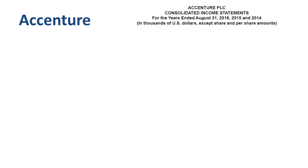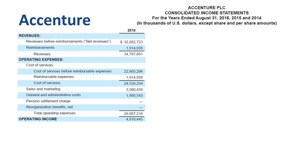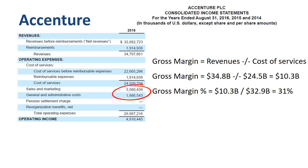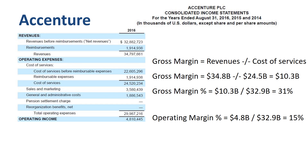Accenture's financial year ended on August 31st, 2016. In the 12 months of their fiscal 2016, they generated 32.9 billion in net revenues and 4.8 billion in Operating Income. Gross Margin is not mentioned as a separate line item, but we can calculate it by taking revenues minus cost of services. Gross Margin is 10.3 billion dollars, or 31% of net revenue. Sales, Marketing, General, and Administrative expenses take up 16% of revenue, therefore Operating Margin is 15% of revenue.